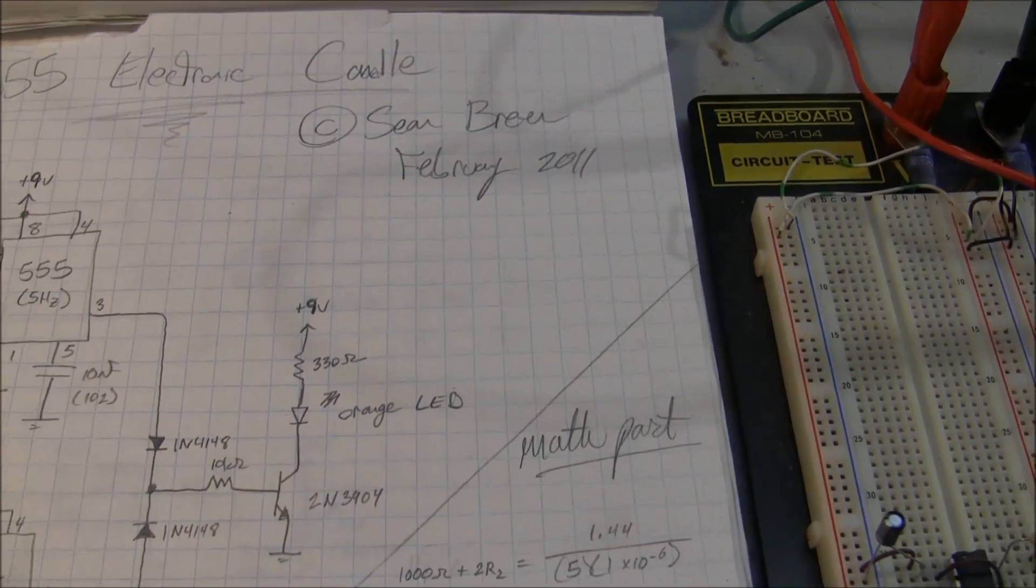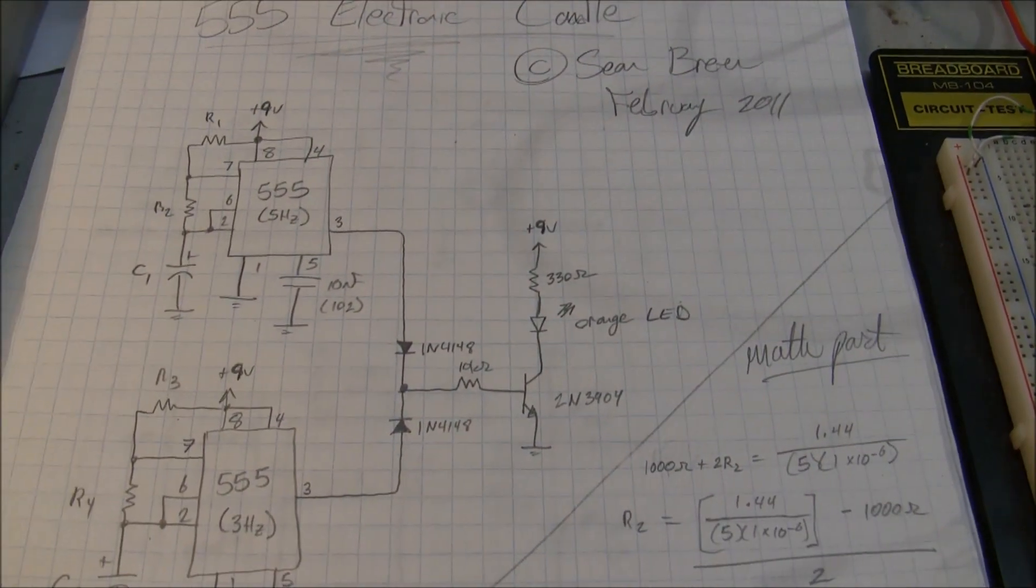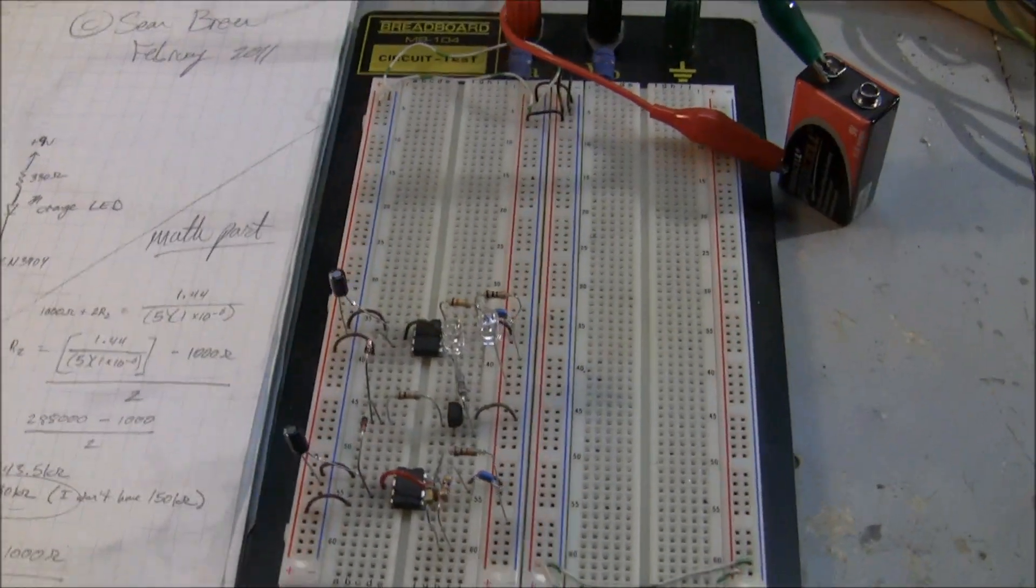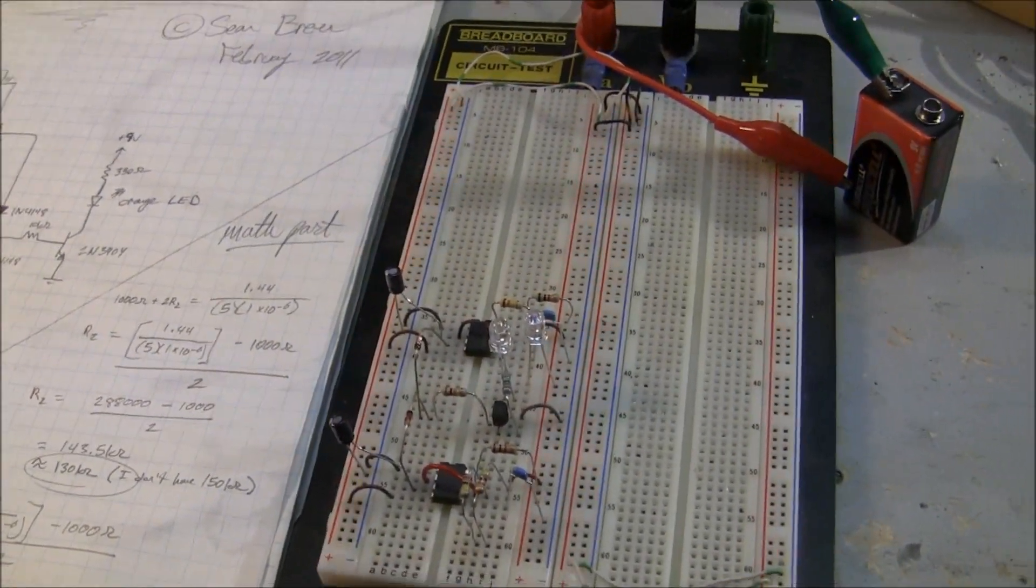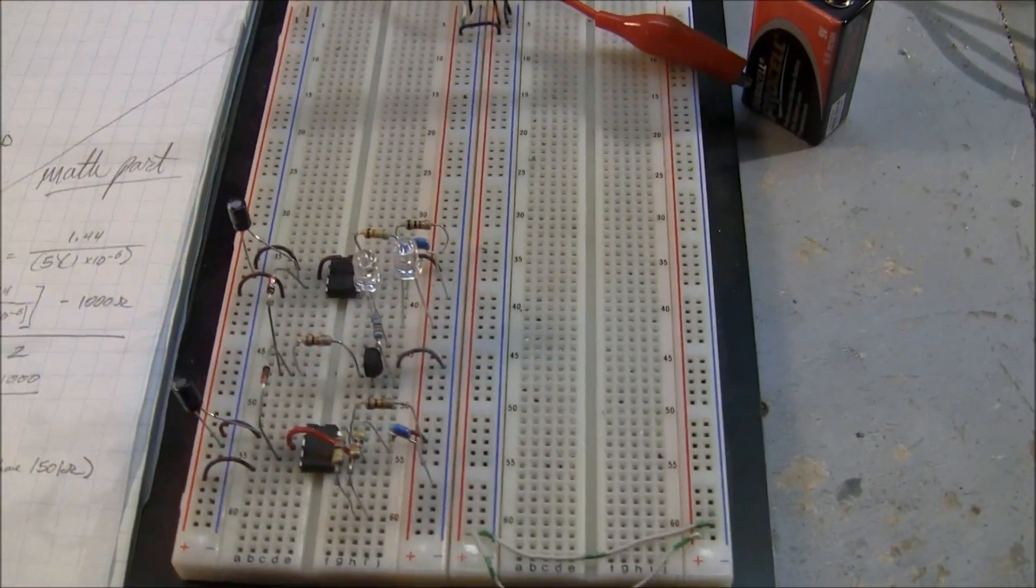The whole thing runs off 9 volts, so it's a very friendly and safe circuit. You can use it in place of a real candle or anything you like. So here it is on the breadboard, not too many parts here.